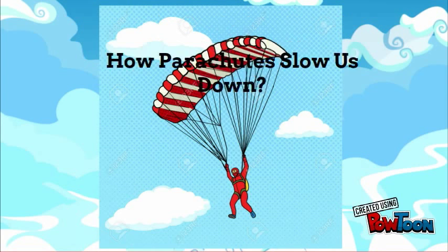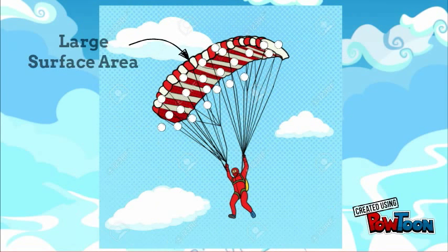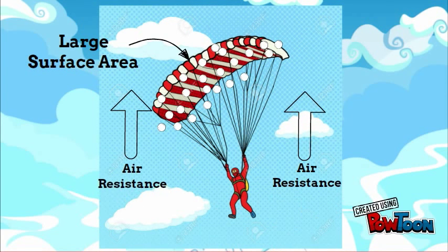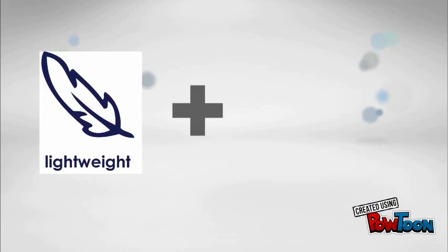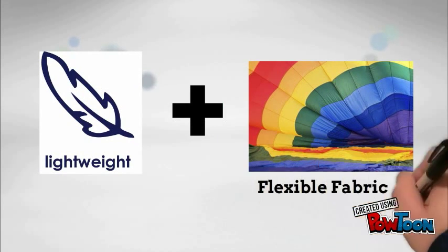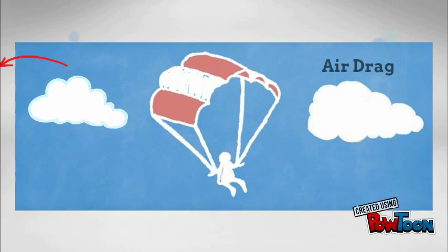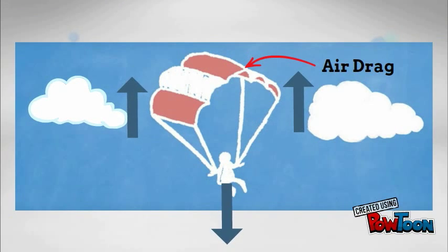Opening a parachute exposes the air molecules to a greater surface area, resulting in a greater magnitude of air resistance. This large surface area, made of a lightweight and flexible fabric, causes an air drag which acts in opposition to the fall, as air molecules caught in the fabric tend to move upwards.